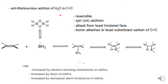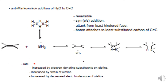The rate of reaction increases with electron-donating substituents on the olefin — when the olefin is electron-rich, reaction rate increases because boron is electron-deficient. Rate also increases with strain of the olefin, as a strained or more reactive olefin reacts faster. Additionally, rate increases when steric hindrance on the olefin is decreased.